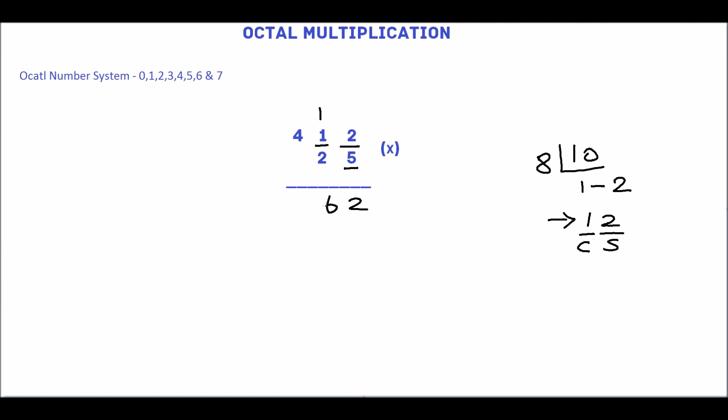Then multiply 5 by 4 which is 20. 20 is not an octal. We will convert this 20 into octal. The quotient is 2 and the remainder is 4. So the equivalent octal number is 24.